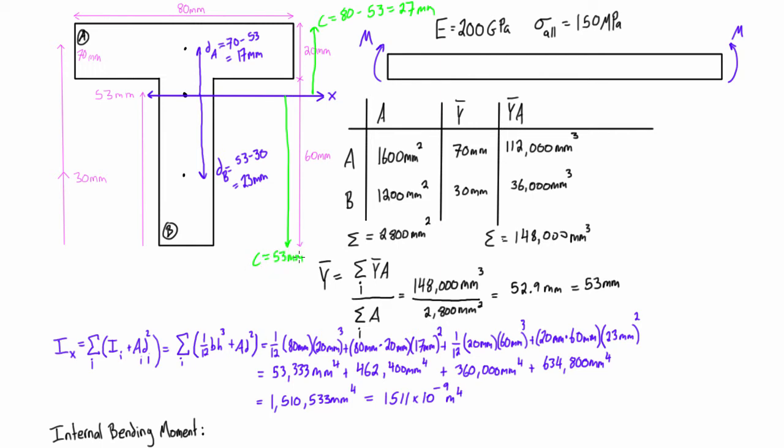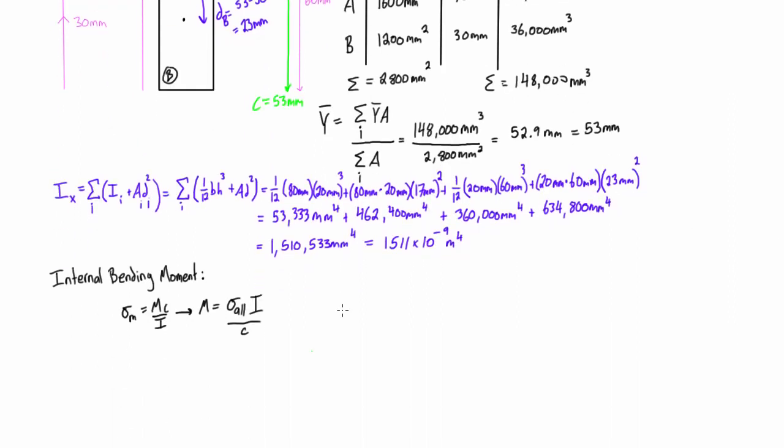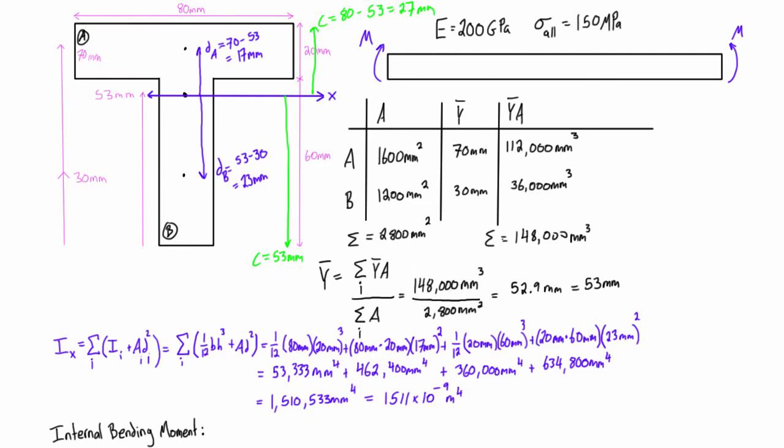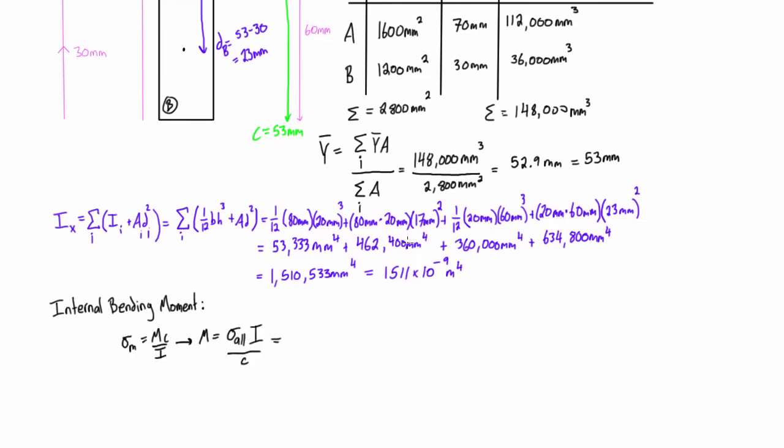We have everything that we need, so let's punch in some numbers. For our max allowable stress we have 150 megapascals, so that is 150 times 10 to the 6 newtons per meter squared. Our I value, moment of inertia, is 1511 times 10 to the negative 9 meters to the fourth. Then we divide that all by c, and c was 53 millimeters, so we'll put that as 0.053 meters.